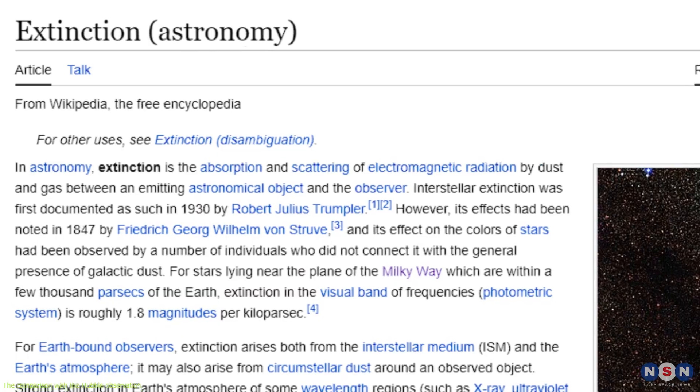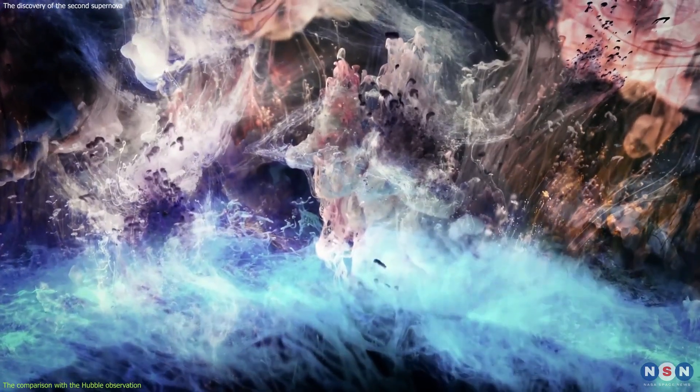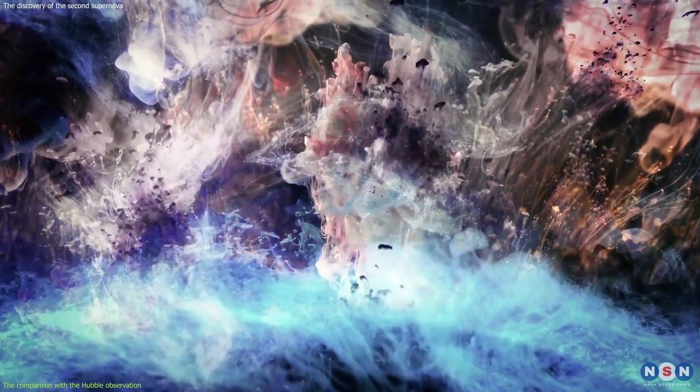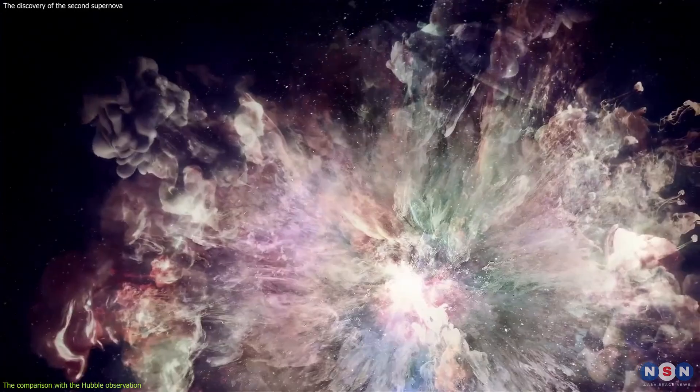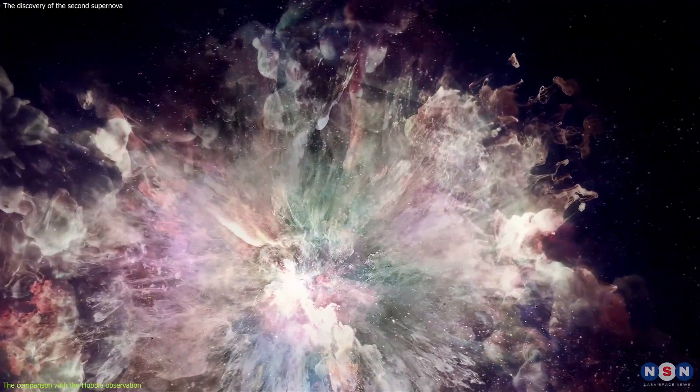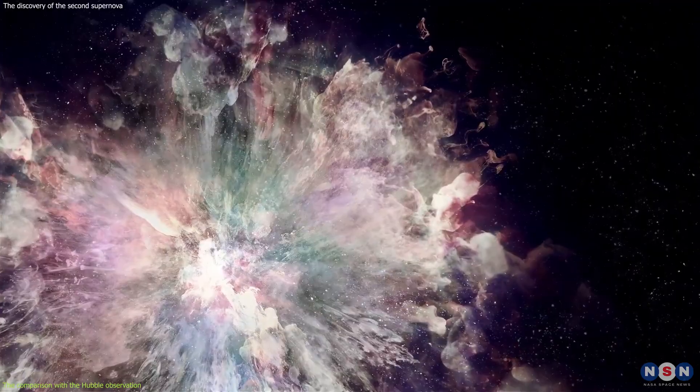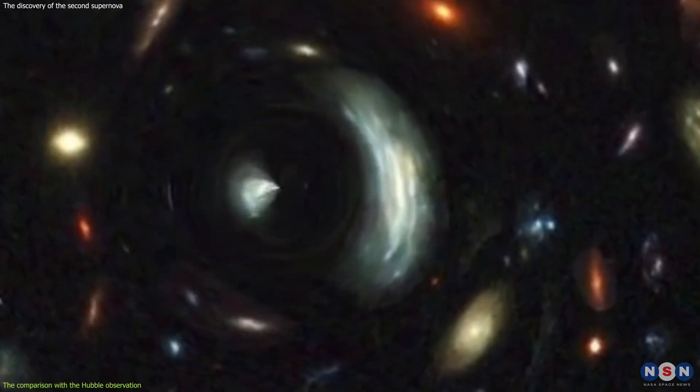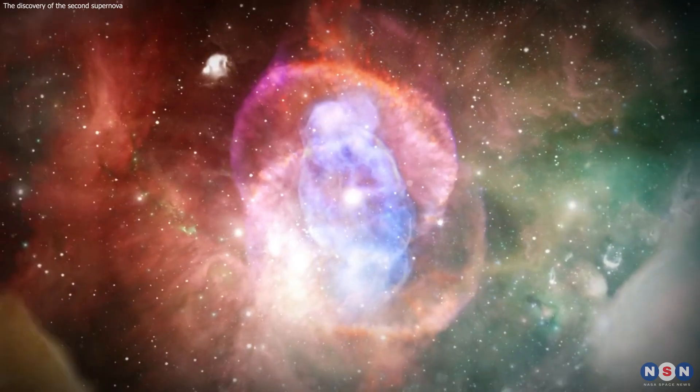Moreover, the dust and the gas in the cluster and the galaxy can obscure and dim the light of the supernovae, making them less visible and redder. This effect is called dust extinction, and it can affect the brightness, the color, and the spectra of the supernovae. To overcome these difficulties, we need to use sophisticated models and simulations, and correct for the lensing, the time delay, and the dust extinction effects.